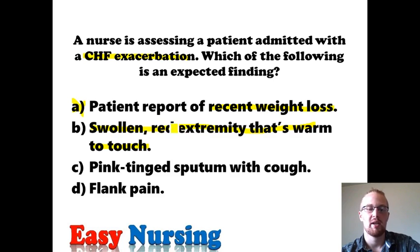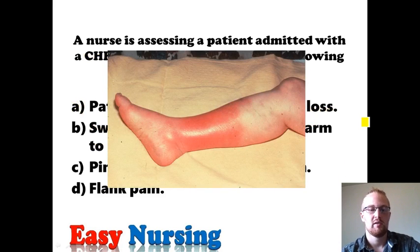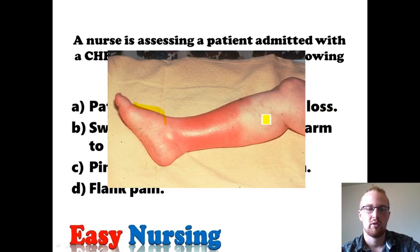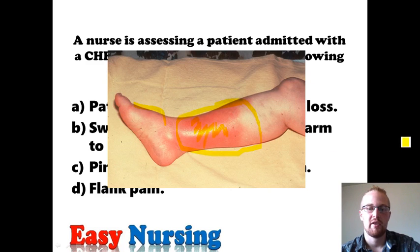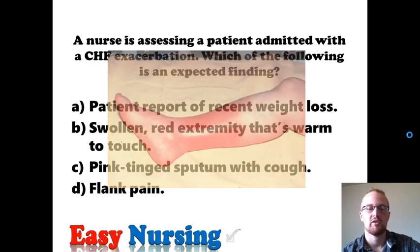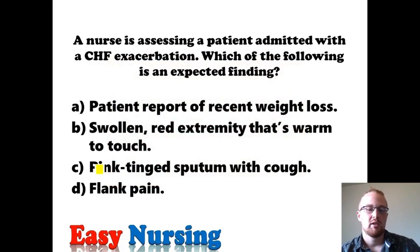A swollen red extremity that's warm to touch — while CHF patients can have peripheral edema, this is describing one extremity that's red and warm to touch, which sounds more like cellulitis. Looking at a picture of cellulitis: yes, they'll probably be swollen, but the redness is not normal — that's a skin infection or infection of the subcutaneous tissue. Pink-tinged sputum with a cough fits CHF because excess fluid around the lungs causes pink-tinged sputum and cough. That looks like the correct answer.